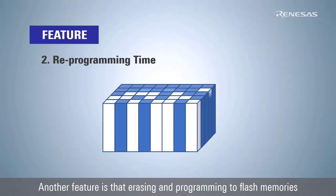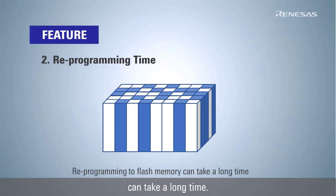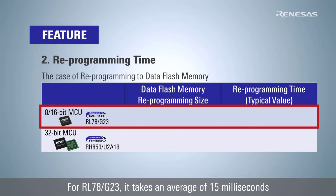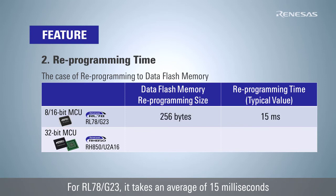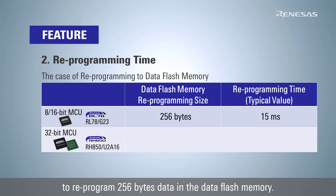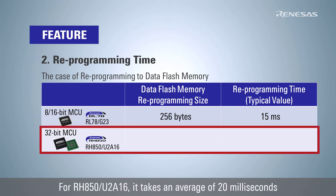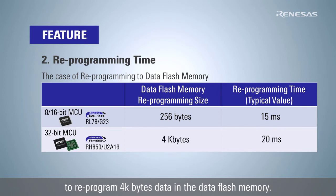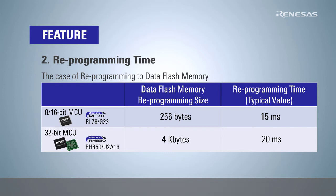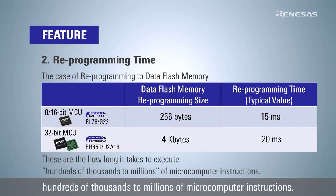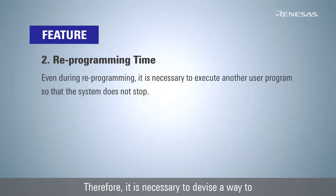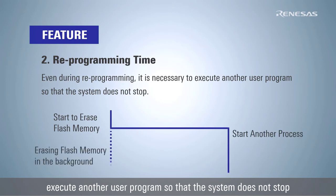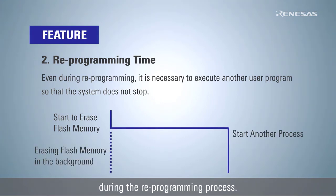Another feature is that erasing and programming to flash memories can take a long time. For RL78G23, it takes an average of 15 milliseconds to reprogram 256 bytes of data in the data flash memory. For RH850U2A16, it takes an average of 20 milliseconds to reprogram 4 kilobytes of data in the data flash memory. These are how long it takes to execute hundreds of thousands to millions of microcomputer instructions. Therefore, it is necessary to devise a way to execute another user program so that the system does not stop during the reprogramming process.